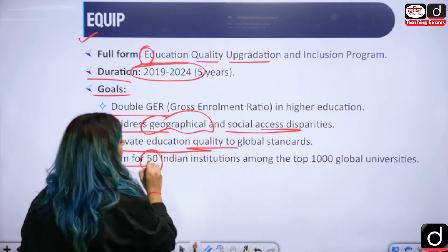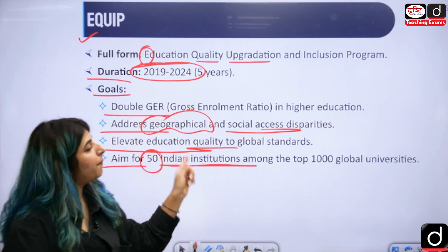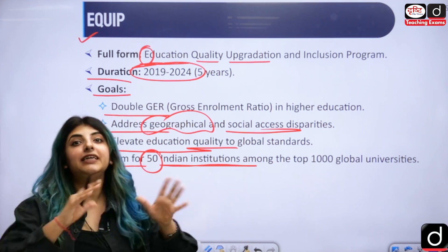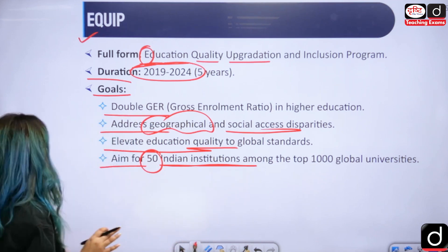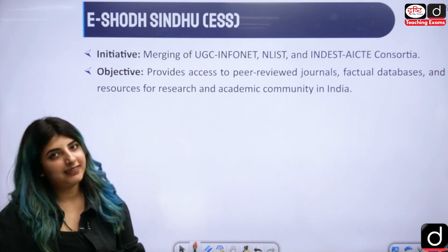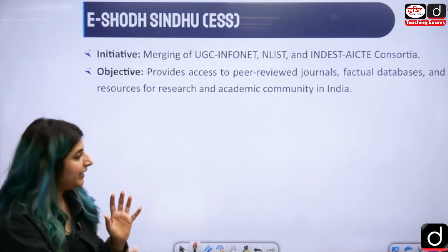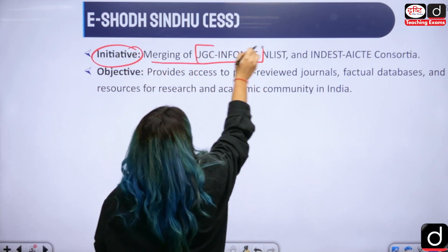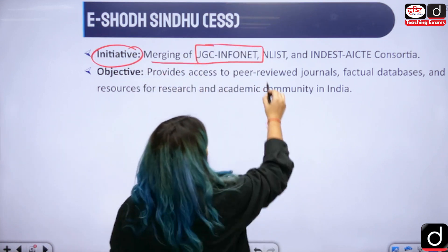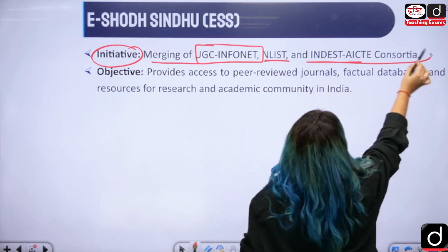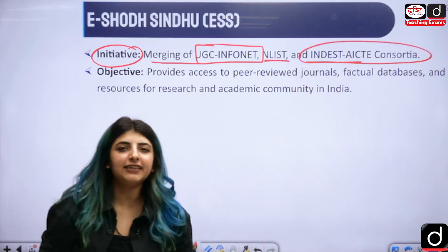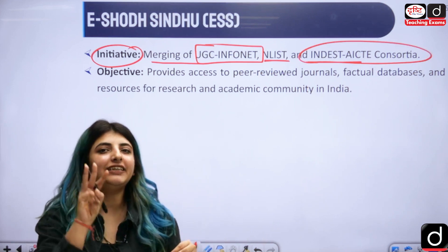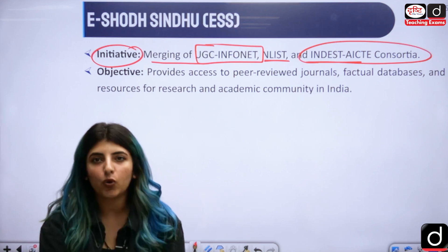One specific aim under EQIP is for 50 Indian institutions to be ranked among the top thousand global universities — this could be asked as a statement-based question. The next scheme is e-Shodh Sindhu, which is the merging of the UGC InfoNet portal, ENLIST, and Indest-AICTE consortia — bringing three different consortia together.